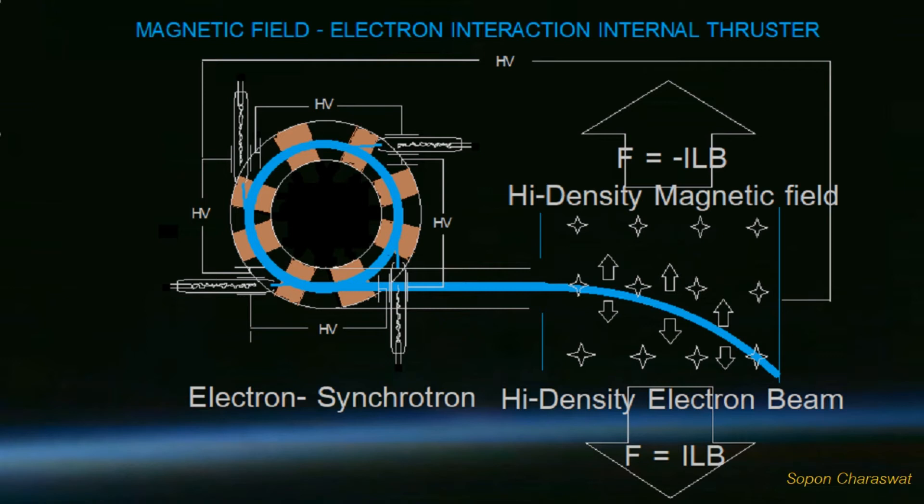Electron particle velocity accelerated and denser by the electron synchrotron will generate maximum current when passing through the electric field, and maximum force is obtained through the intense magnetic field in the propulsion chamber of the spacecraft.